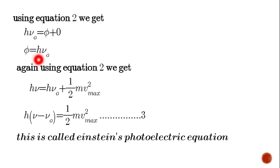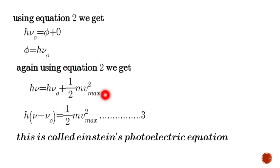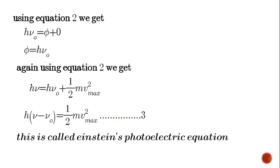So φ₀ is equal to hν₀. Substituting into equation 2: hν = hν₀ + ½mv²max. Therefore, h(ν − ν₀) = ½mv²max. This is equation 3, and this equation is called Einstein's photoelectric equation. This was the equation for which Einstein was awarded the Nobel Prize.